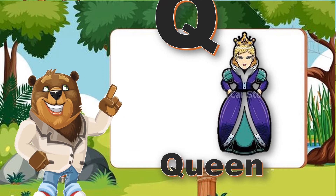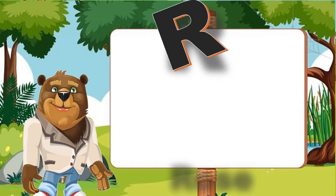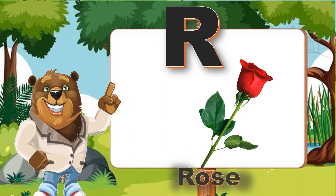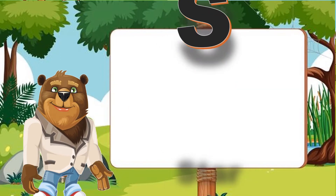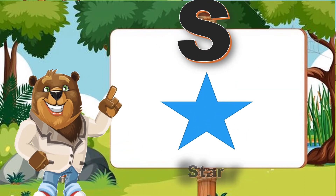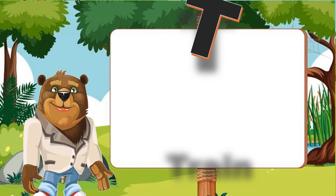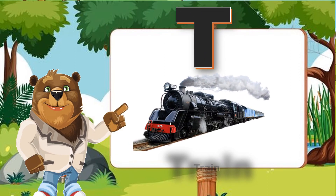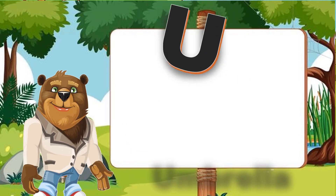Q for queen, R for rose, S for star, T for train, U for umbrella.